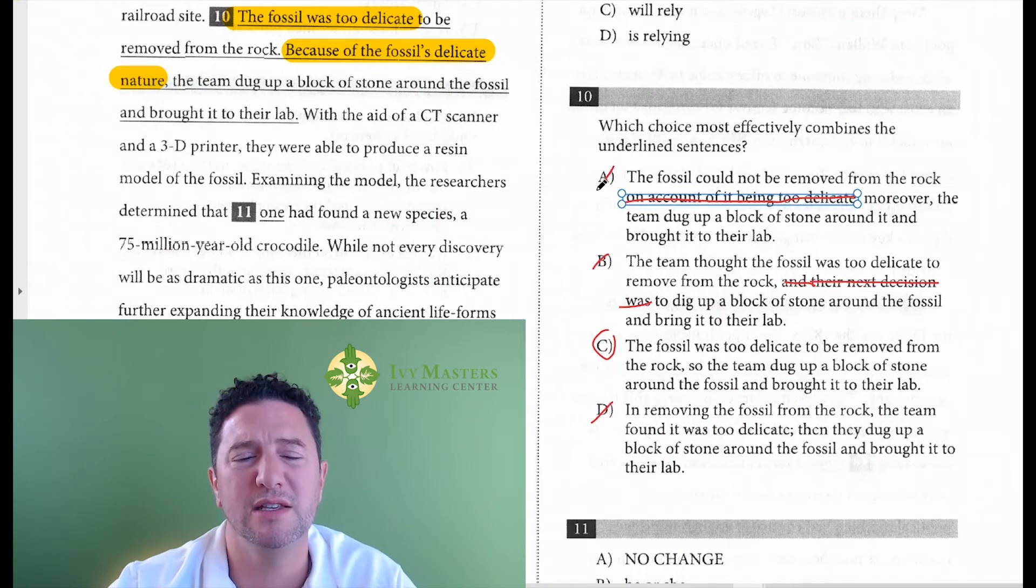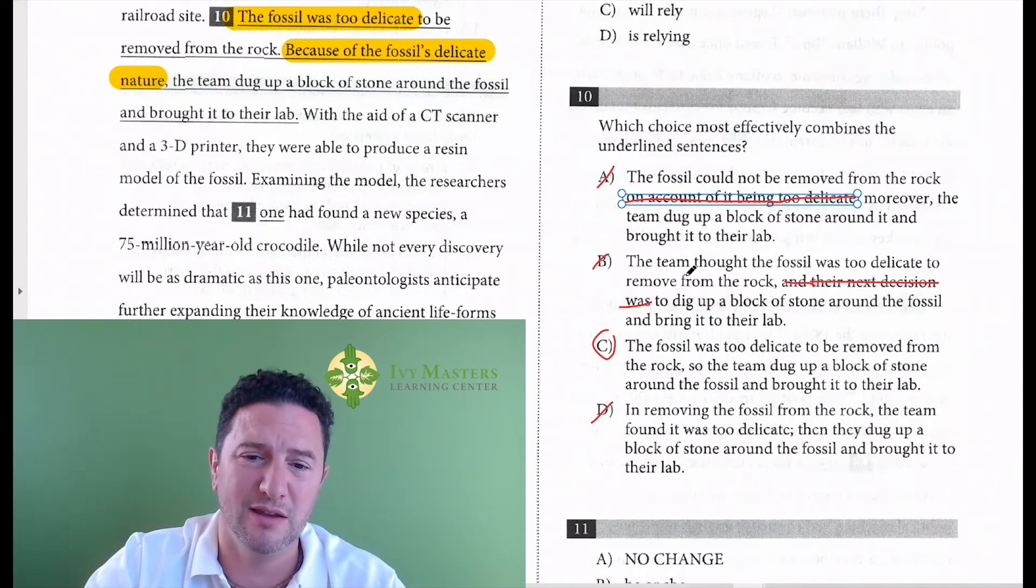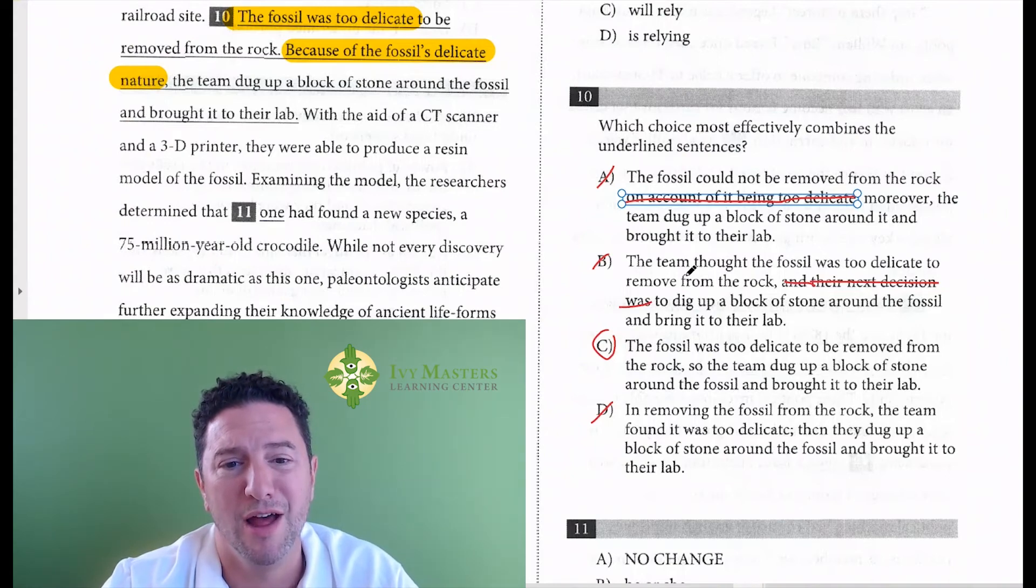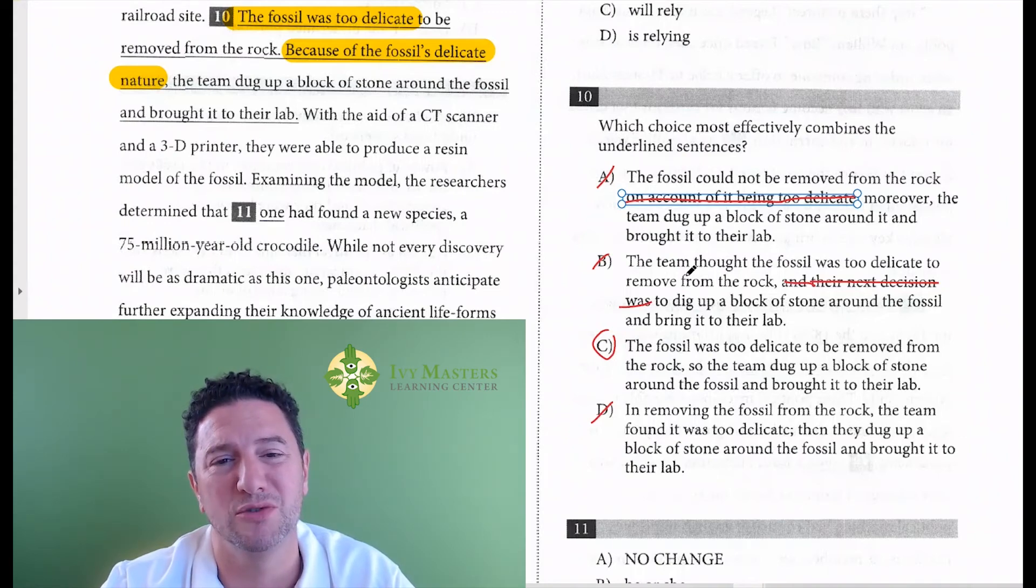So here's the deal. On the SAT, when you see one answer choice that's too wordy, typically that question is testing wordiness. So you get two or more answer choices that are too wordy and the correct answer is the shortest one.